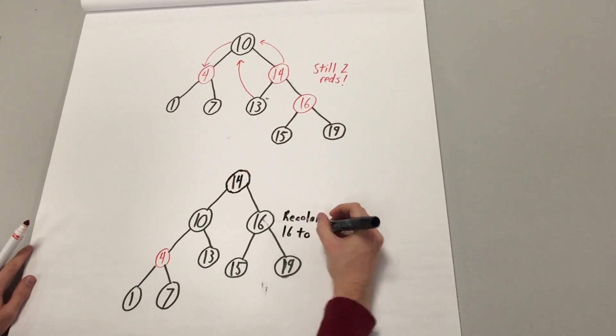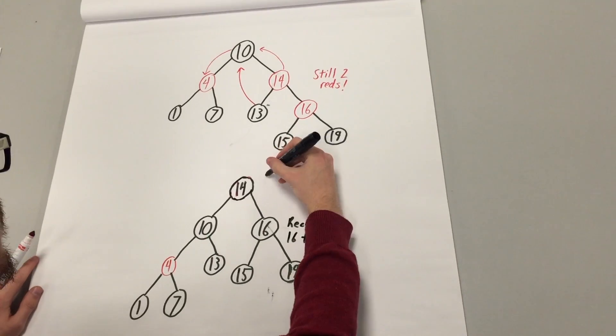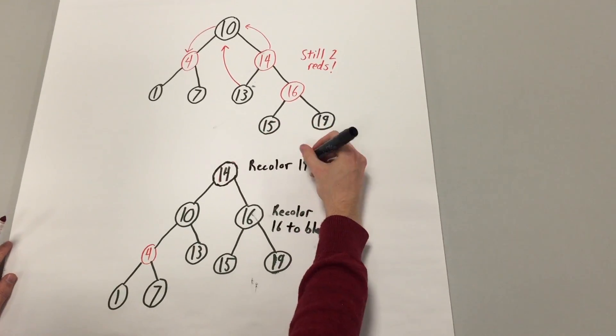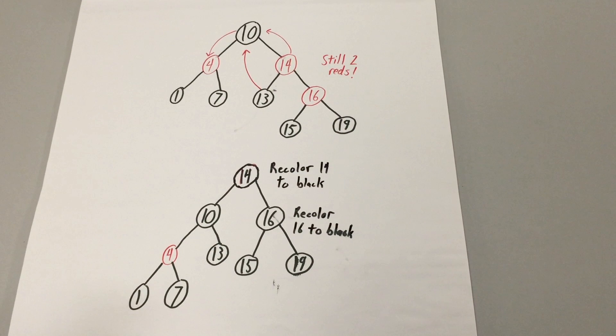The same concept behind red-black tree insertions applies for deletions. Removing a node from a red-black tree makes use of the BST deletion procedure and then restores the red-black tree properties in O(log n) time. The total running time for a deletion process takes O(log n) time, which meets the complexity requirements for the primitive operations.